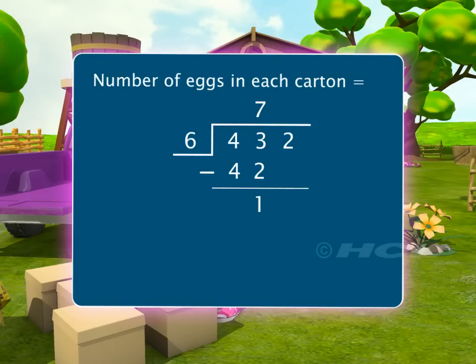Next, we bring down 2 from the dividend. 6 goes 2 times in 12. We write 2 in the quotient and 12 below 12. Subtracting 12 from 12, we get 0.